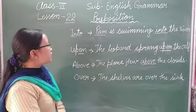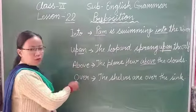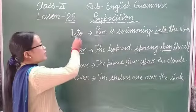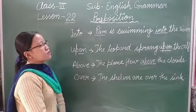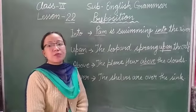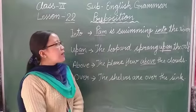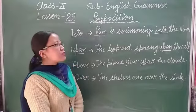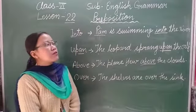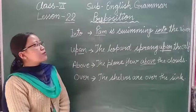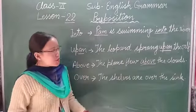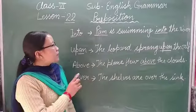Now we have some more prepositions: 'into', 'upon', 'above', and 'over'. First is 'into' — it is formed from 'in' and 'to'. We use 'into' when the subject is in motion. For example: 'Ram is swimming into the river' — Ram is in motion, he is swimming, so we use 'into'.